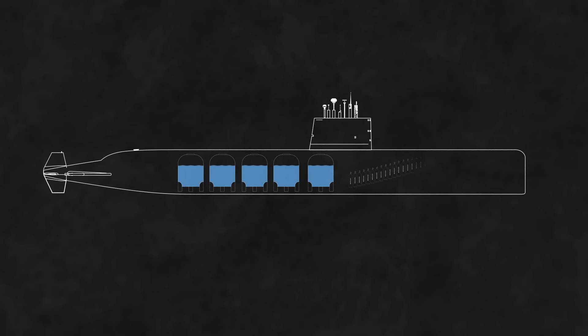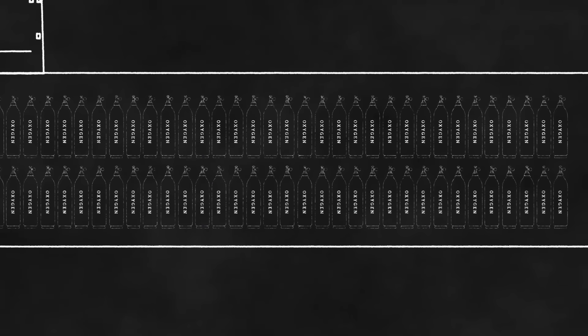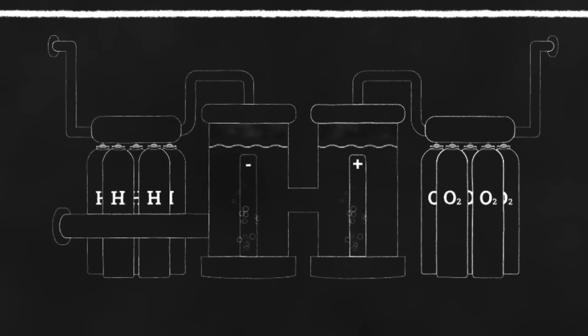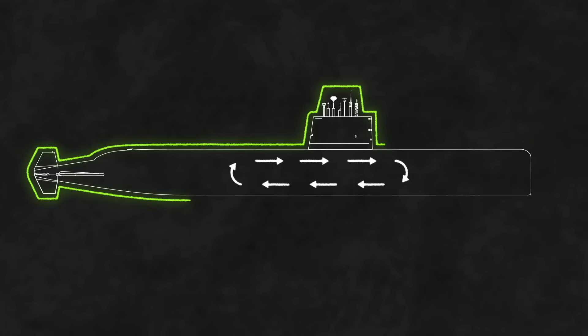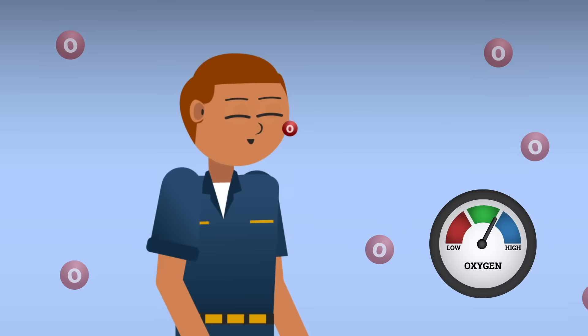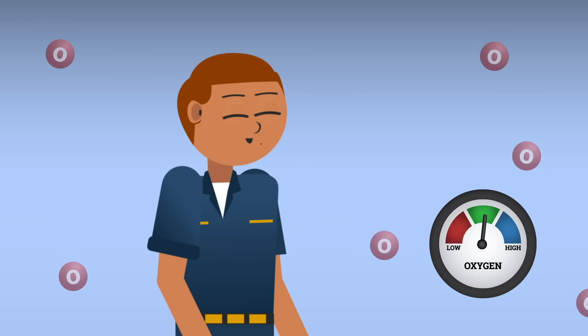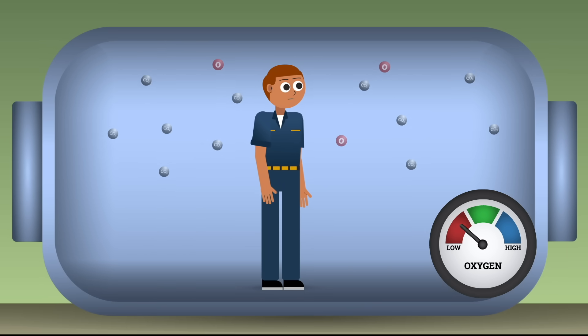You can't stockpile three months of breathable air or fresh water for a hundred people, not without turning the vessel into a floating warehouse. So, instead, the submarine makes them. The atmosphere inside the submarine is a carefully engineered system. Sealed, pressurized, and constantly monitored. Every breath a crew member takes consumes oxygen. Every exhale adds carbon dioxide. And in a sealed steel tube, that balance matters more than anywhere else.